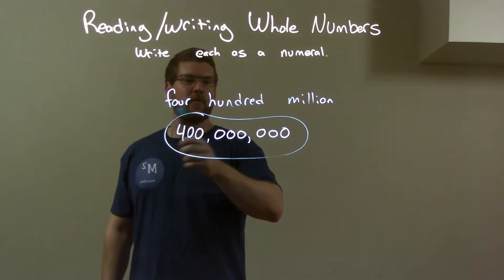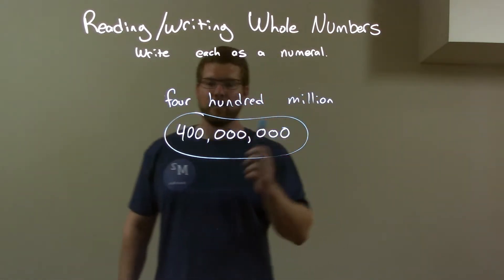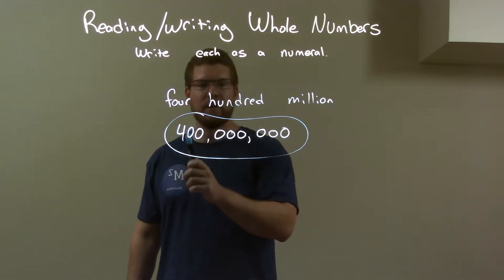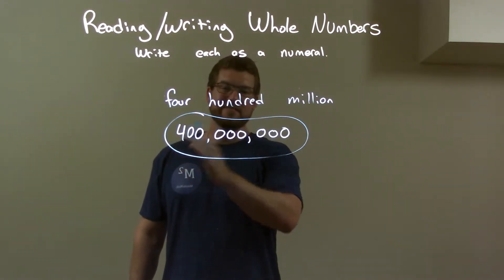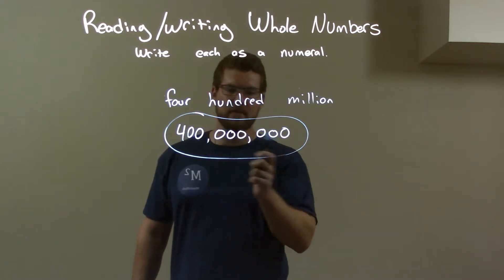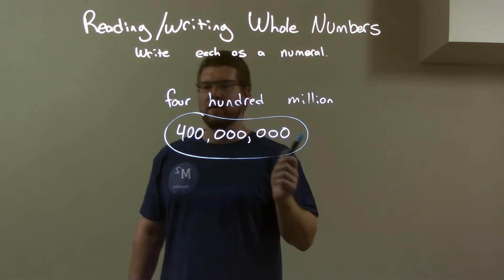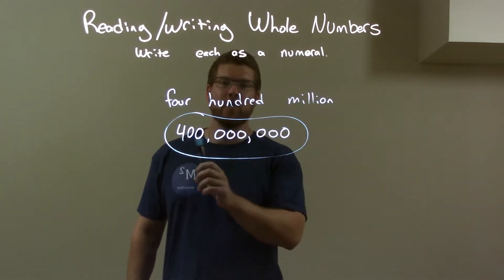So quick recap, we're given 400 million and we're going to write that as a numeral. So 400 right there. Then just the million part afterwards is six places. So six zeros, there's nothing else. So here we have our final answer again, 400 million.